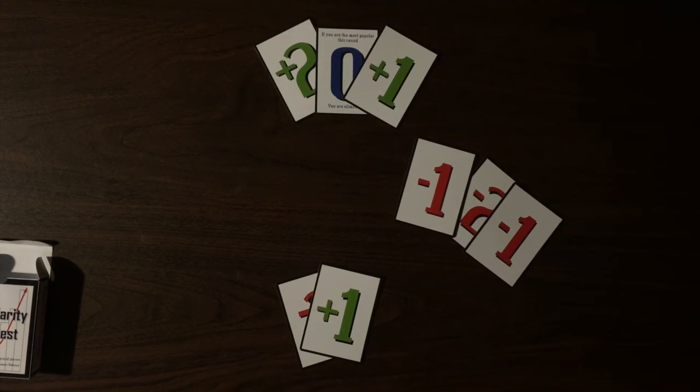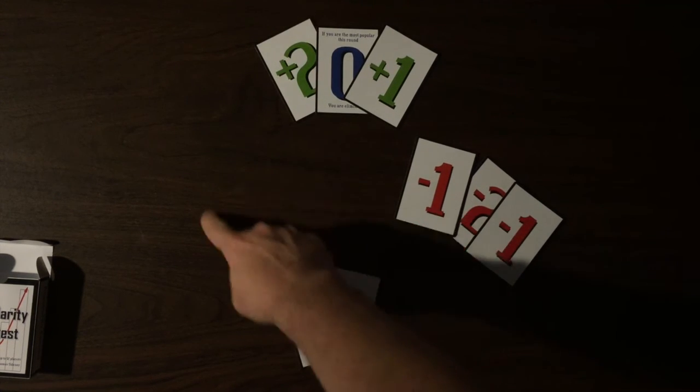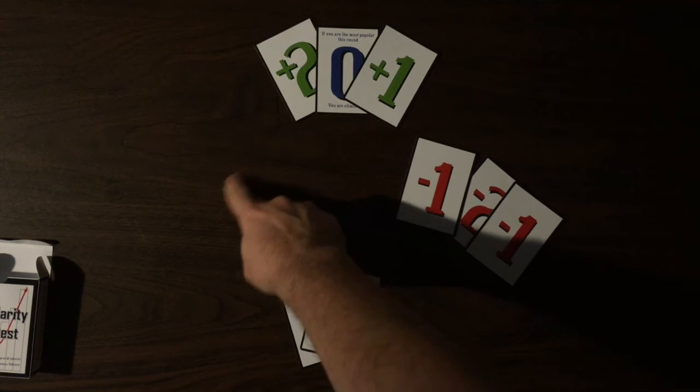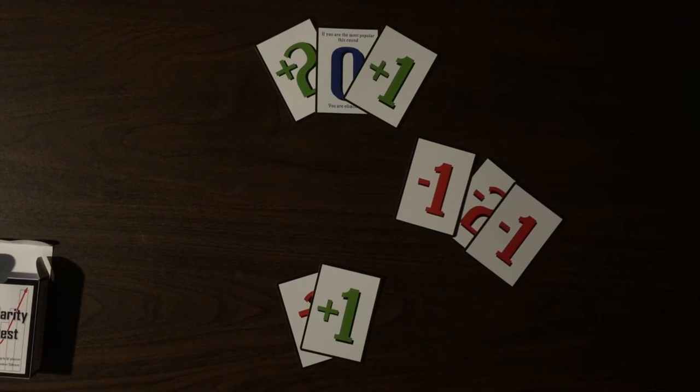There can be a situation where a player has no cards. In this situation, this player's score would be zero. This player could be eliminated if zero was the lowest popularity. And that's pretty much it. Gameplay continues until there is only one player left and that person is the most popular and the winner of Popularity Contest.